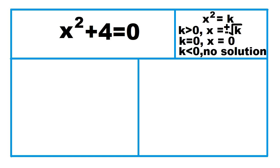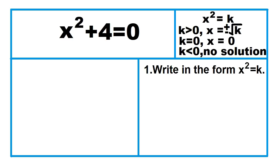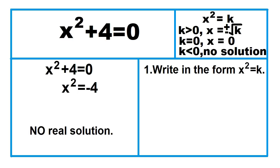Another example. Write the equation in the form x squared equals k by subtracting 4 from both sides of the equation. The equation is x squared equals negative 4. Note that k is less than 0, and there is no real number which when squared gives negative 4. So the answer is no real solution.